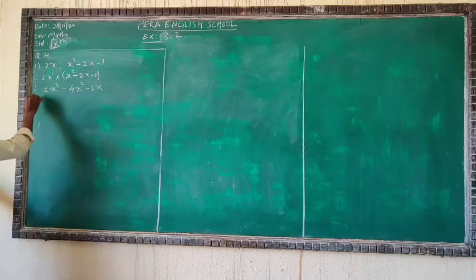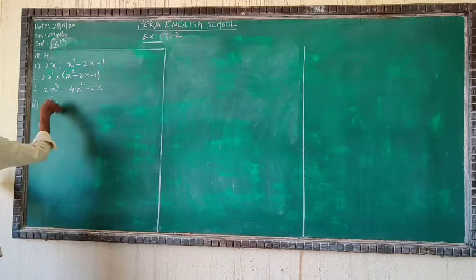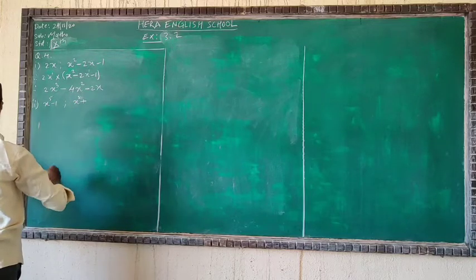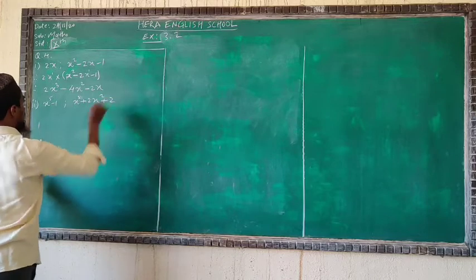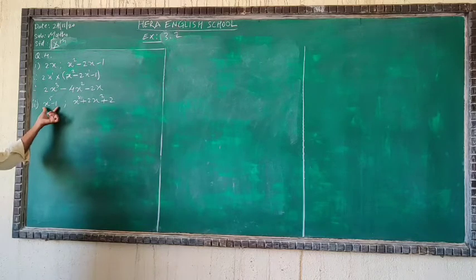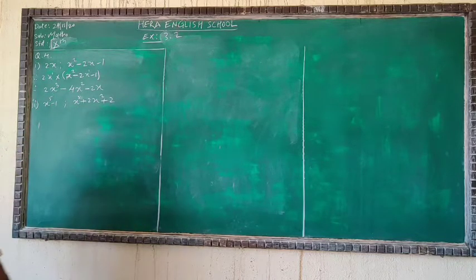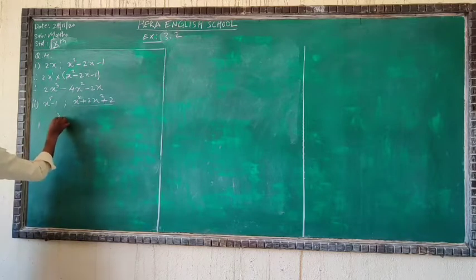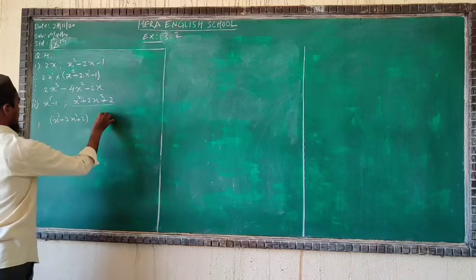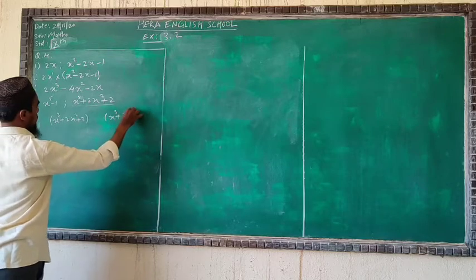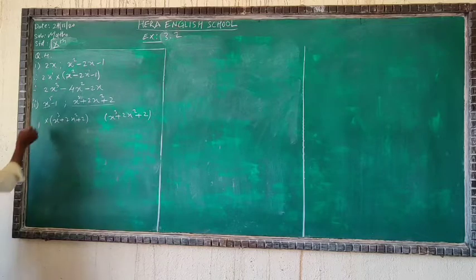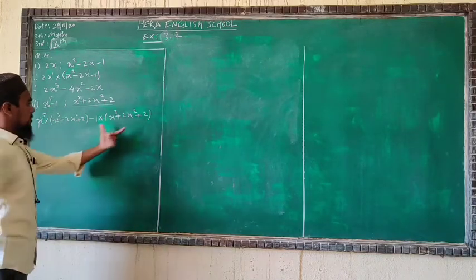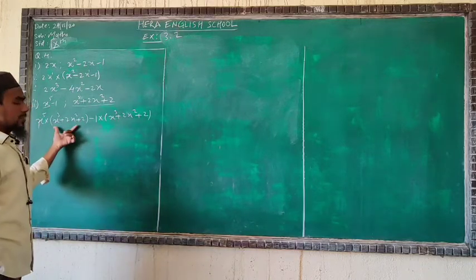Second question: (x + 2)(x³ + 2x² + 2). Here we have a binomial multiplied by a trinomial. We write the second polynomial x³ + 2x² + 2 twice — once multiplied by x and once multiplied by 2, and then multiplied by minus 1.